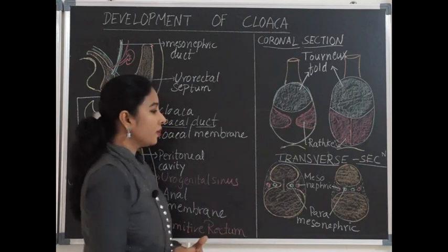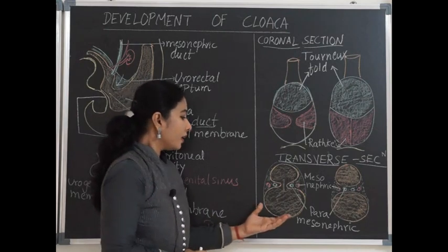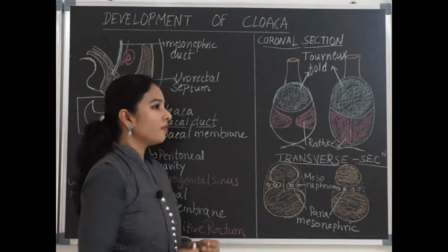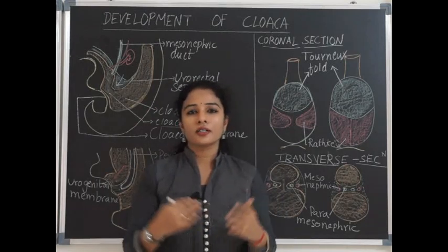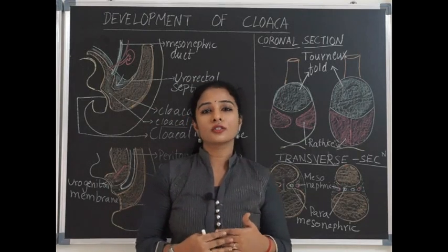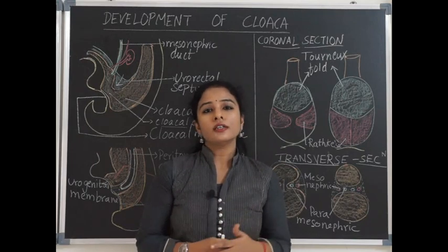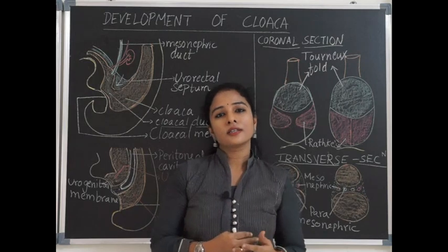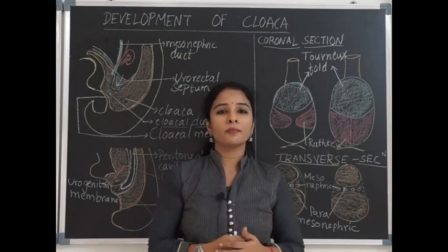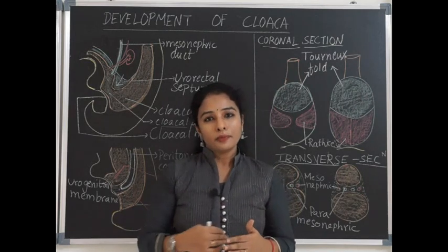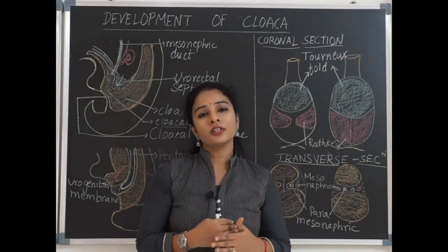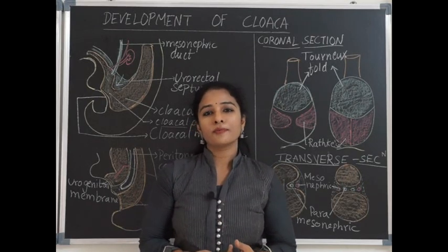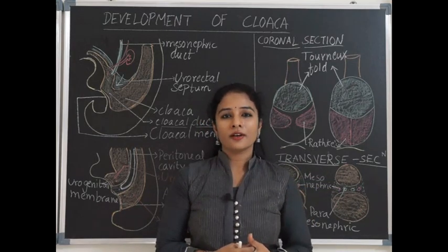That is about the urorectal septum and development of the rectum and anal canal. Looking at the interior of the rectum, it has valves called Houston's valves. Up to the third Houston's valve, the mucous membrane is derived from the pre-allantoic part of the hindgut. Below the third Houston's valve, the mucous membrane is derived from the endodermal cloaca.